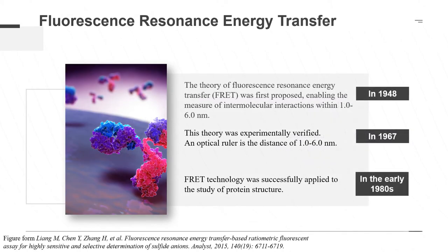The third technique is fluorescence resonance energy transfer technology, or FRET. In 1948, the theory of FRET was first proposed, which can measure the intermolecular interactions weighing a distance of 1 to 6 nanometers. In 1967, this theory was experimentally verified, and the distance of 1 to 6 nanometers was called an optical ruler. In the early 1980s, FRET technology was successfully applied to the study of protein structure. FRET can be combined with a variety of advanced technologies and methods, such as electron microscopy and X-ray diffraction, to promote the development of detection methods in molecular biology.